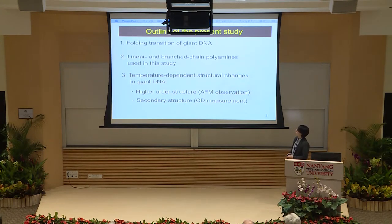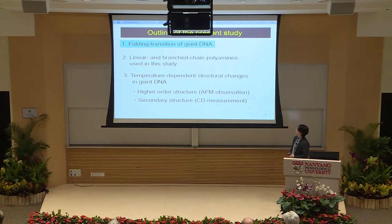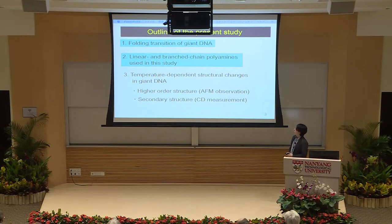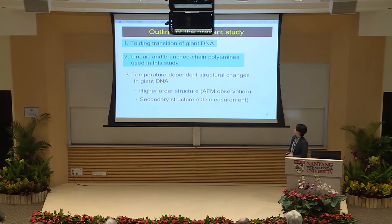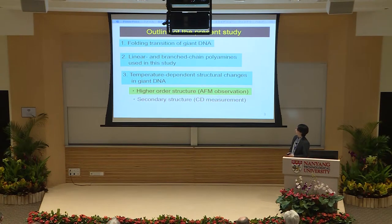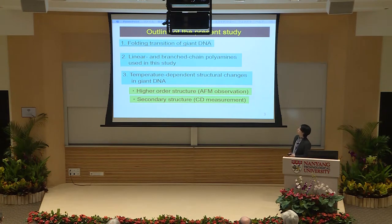This is the outline of my presentation. First, I will give a brief introduction about the folding transition of giant DNA. Next, I am going to explain linear and branched-chain polyamines used in this study. After that, I will focus on DNA higher-order structure observation by atomic force microscopy. Finally, I am going to show the DNA secondary structure by CD measurement. I would like to start with the first one: the folding transition of giant DNA.